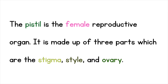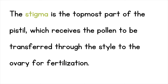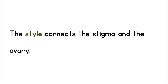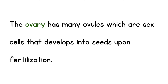The pistil is the female reproductive organ. It is made up of three parts, which are the stigma, style, and ovary. The stigma is the topmost part of the pistil, which receives the pollen to be transferred through the style to the ovary for fertilization. The style connects the stigma and the ovary. The ovary has many ovules, which are sex cells, that develop into seeds upon fertilization.